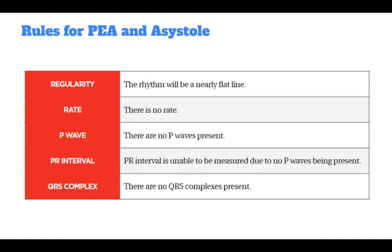The rules for PEA and asystole include regularity: the rhythm will be nearly a flat line. The rate: there is no rate. The P-wave: there are no P-waves present. PR interval: unable to be measured due to no P-waves being present. And QRS complex: there are no QRS complexes present.